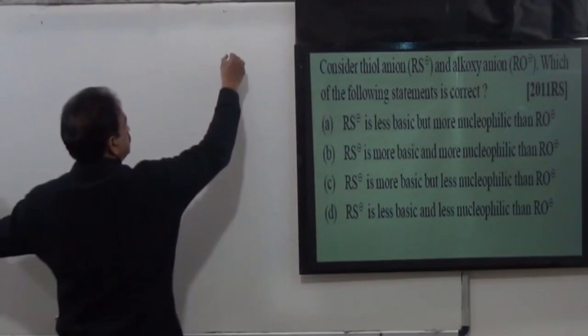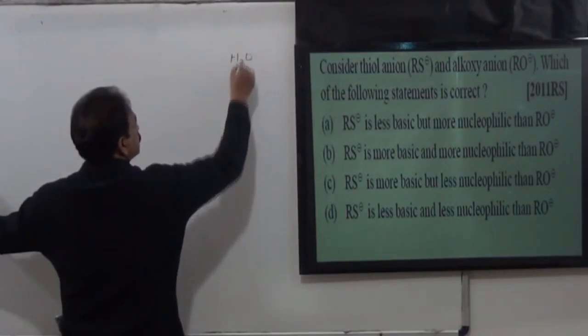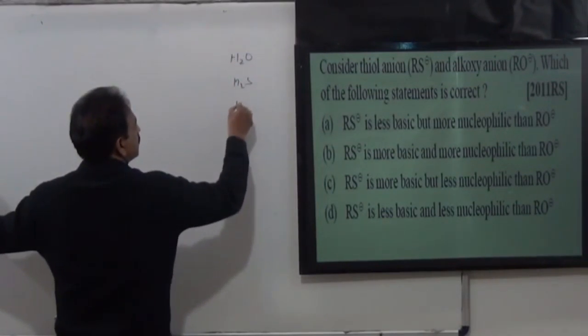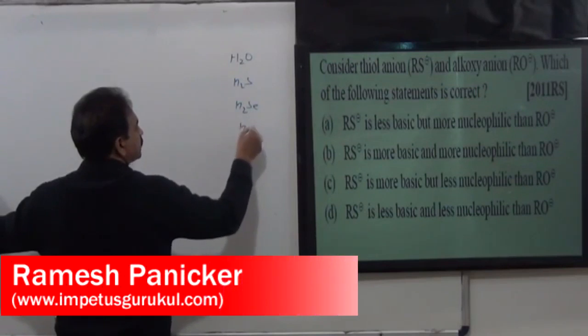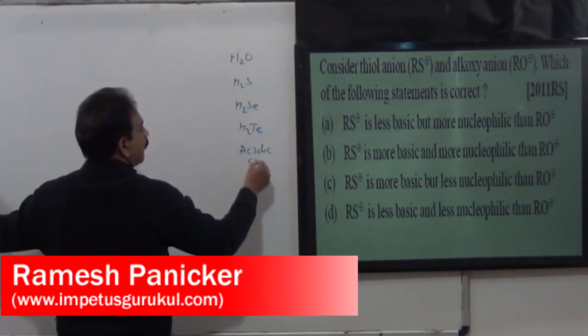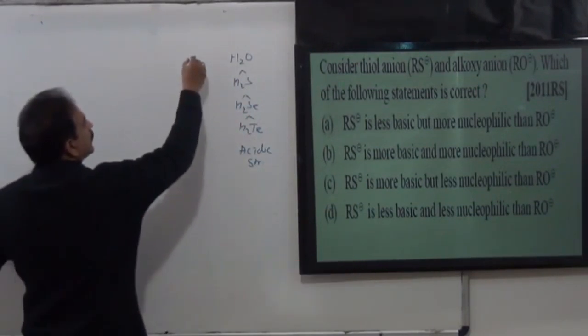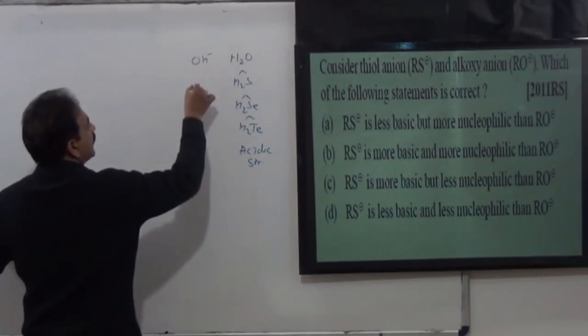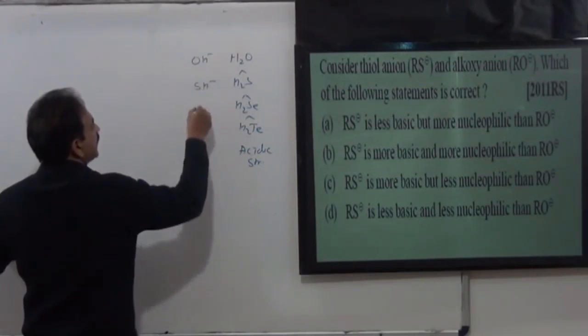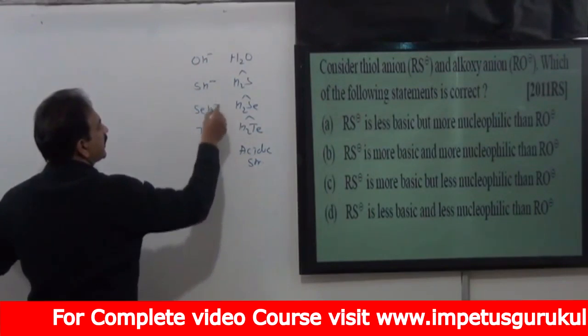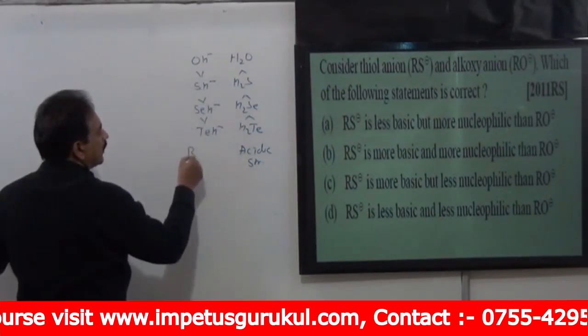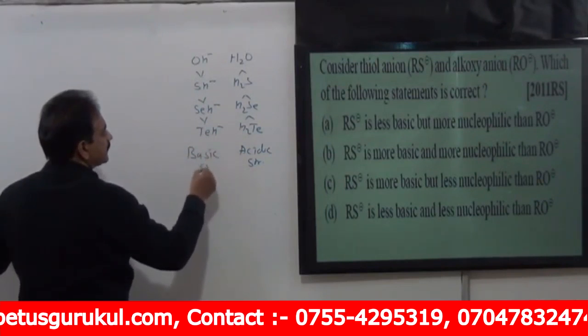H2O, H2S, H2Se, H2Te - which is acidic strength increases downward in hydra-sets. So the bases are OH negative, SH negative, SeH negative and TeH negative. So the basic strength is the order of this basic strength.